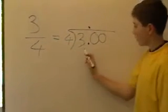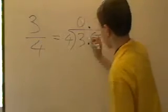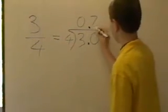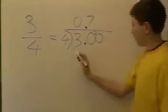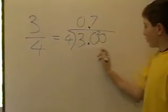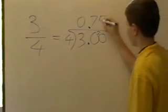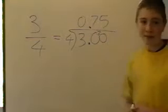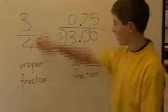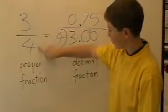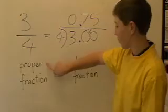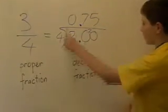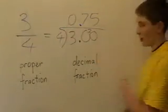So 4 doesn't go into 3. Now 4 goes into 30, 7 times with 2 left over. Now 4 into 20 goes 5 times. And that's our answer for number 1. So our 3 quarters is a proper fraction, and it's the same as our decimal fraction, 0.75.